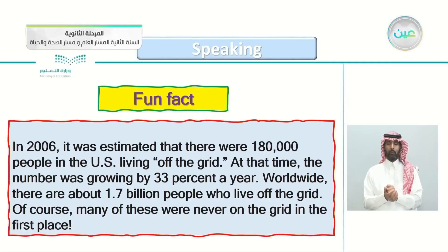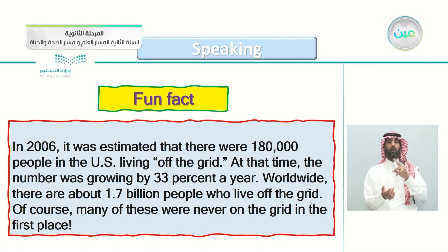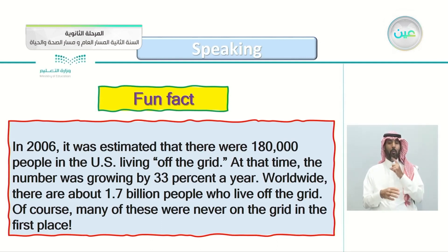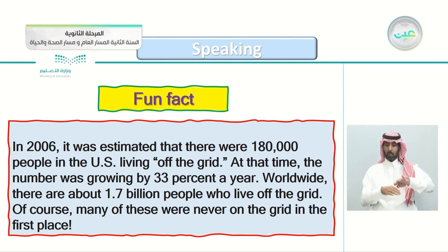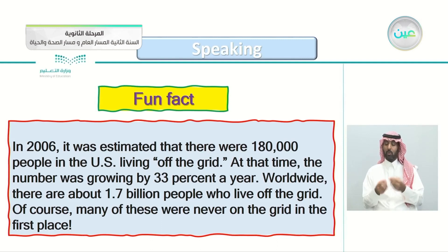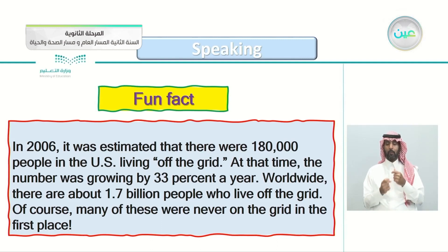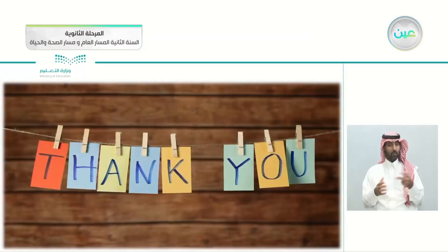Here's a fun fact: in 2006, it was estimated that there were 180,000 people in the US living off the grid, and the number was growing by 33% a year. Worldwide, there are about 1.7 billion people who live off the grid — a large number — though many of these were never on the grid in the first place.